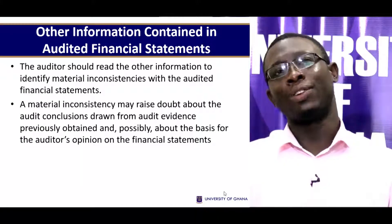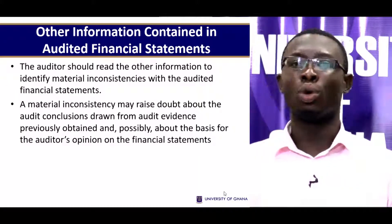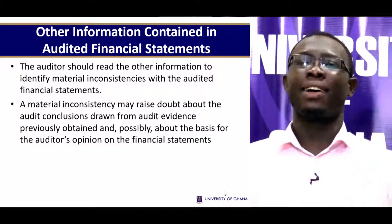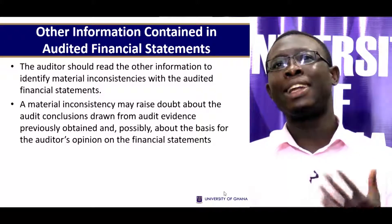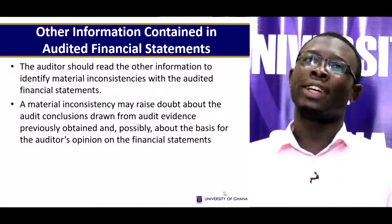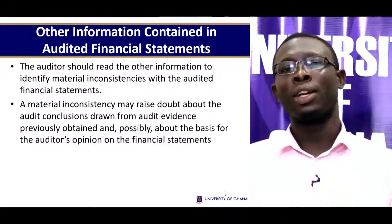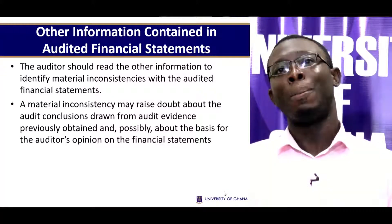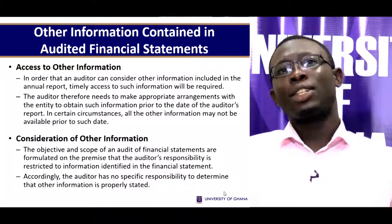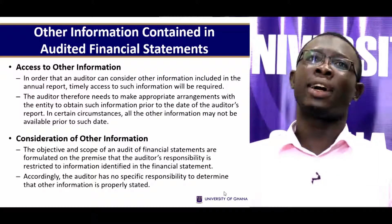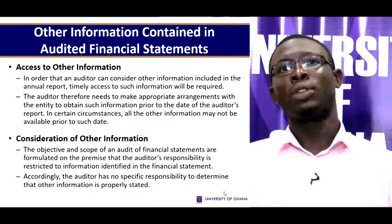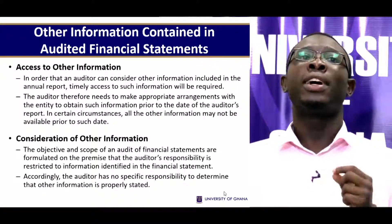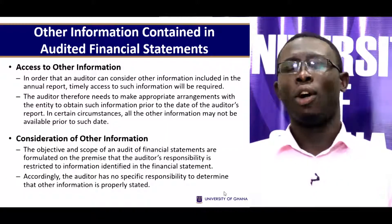Now let's look at other information contained in audited financial statements. Financial statements do not only contain figures and amounts — they have additional information and other information that makes up the whole annual report. The auditor should read the other information to identify material inconsistencies with the audited financial statements. A material inconsistency may raise doubt about the audit conclusions drawn from audit evidence previously obtained. The auditor needs to make appropriate arrangements with the entity to obtain such information prior to the date of the auditor's report.